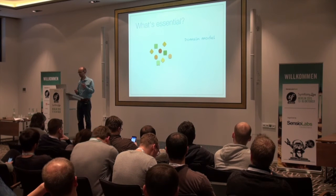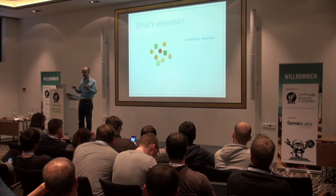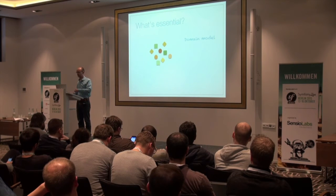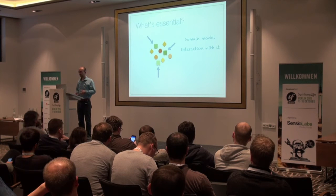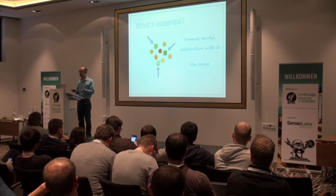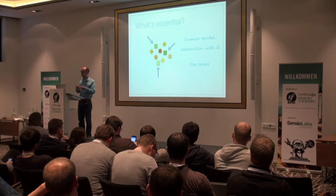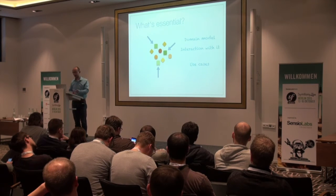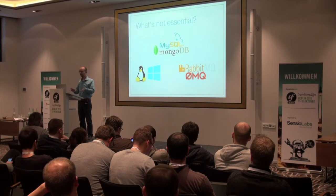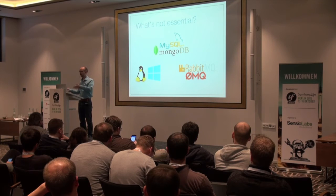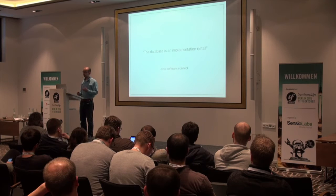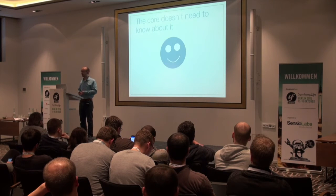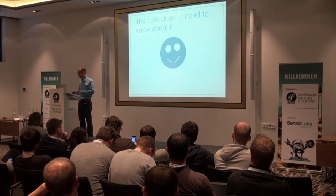According to Eric Evans, what would be essential to your application — what would be in the core — would be the domain model. This can consist of entities, value objects, combined in aggregates, as you may know from domain-driven design. These entities can undergo changes, so there are possible interactions with them. Together, these objects consist in use cases. Thereby, the essence of your application defines every way in which your application can be used by a user. What's not essential? Any of the surrounding techniques you use to store data or access data. As the cool software architect tells us: the database is an implementation detail, because the core doesn't need to know about it at all in order to function properly.